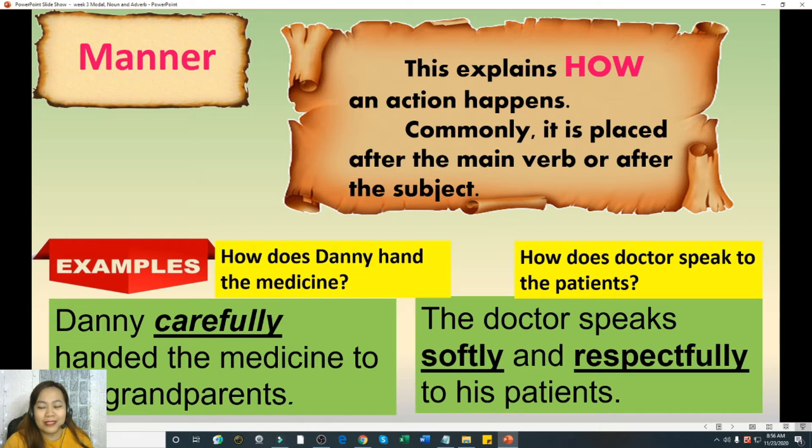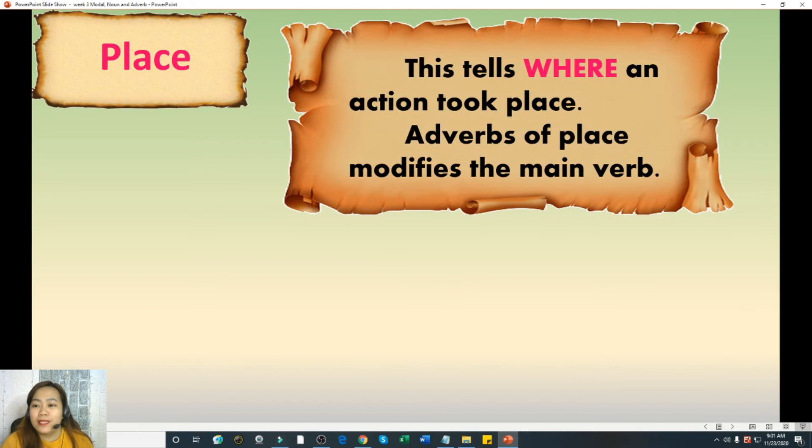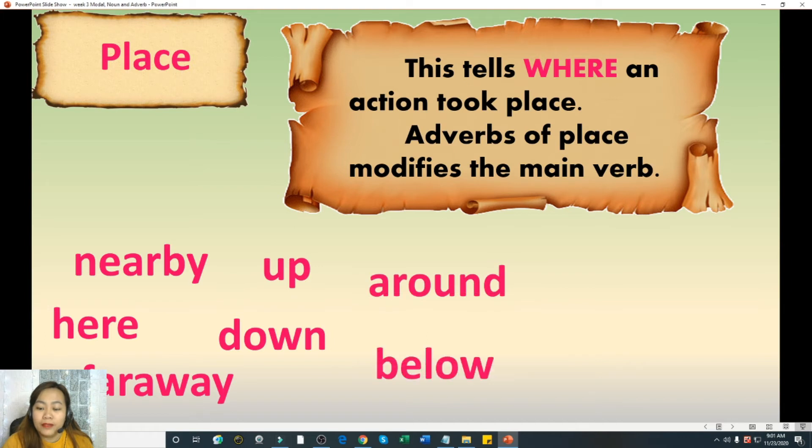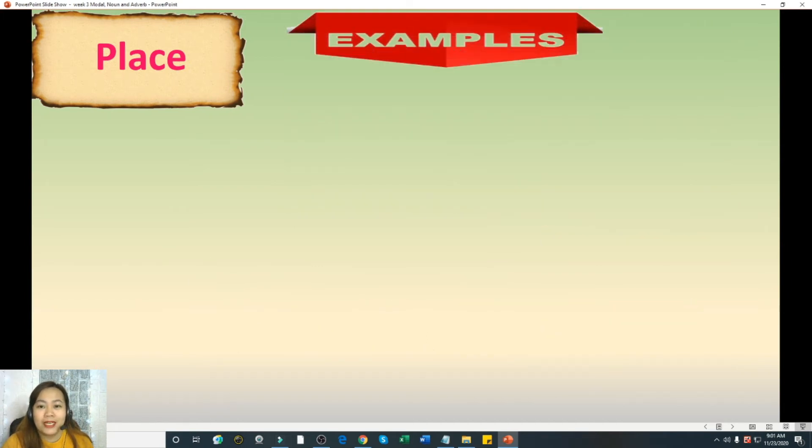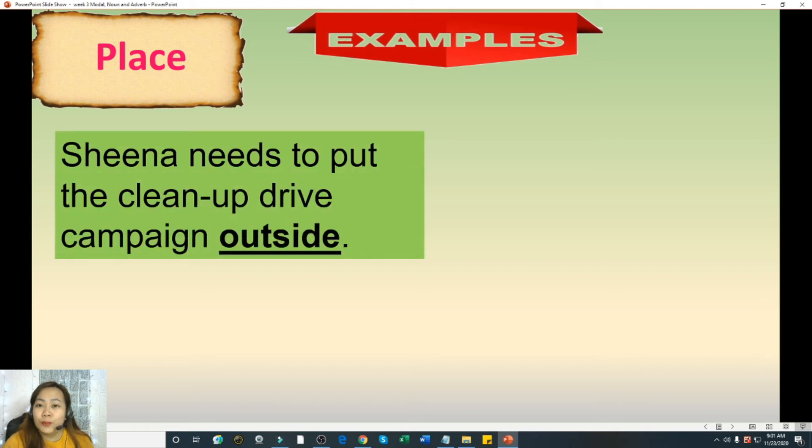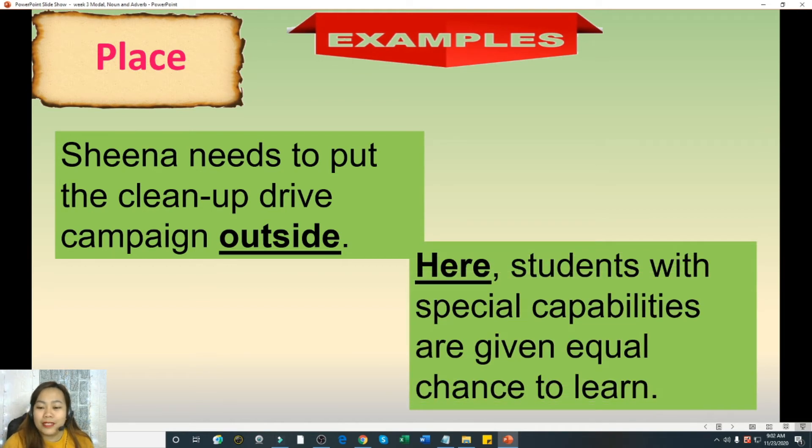Second type of adverb is place. This tells where an action took place. So it answers the question where. Adverb of place modifies the main verb. We have here some examples: nearby, here, far away, up, down, around, below, between, forward, and eastward. So we have another example. Sheena needs to put the cleanup drive campaign outside. Where did Sheena put the cleanup drive campaign? The answer is outside. So our adverb of place in this sentence is outside. Another sentence here, students with special capabilities are given equal chance to learn. Where were students given equal chance to learn? The answer is here. So here is the adverb of place in that sentence.